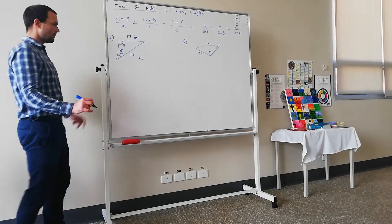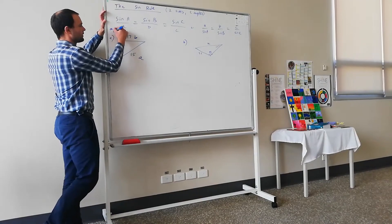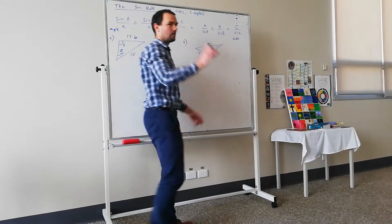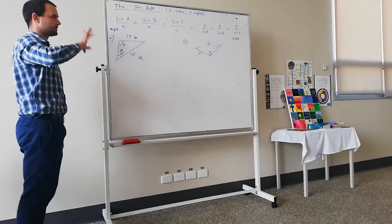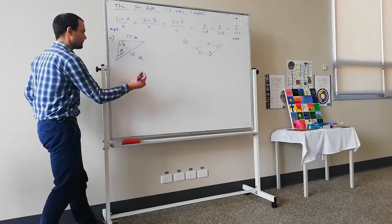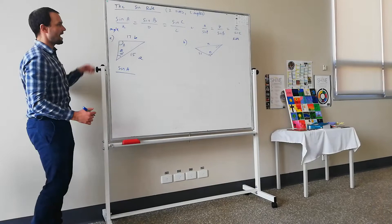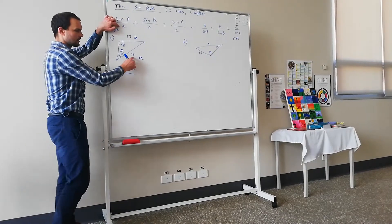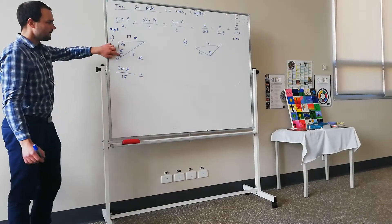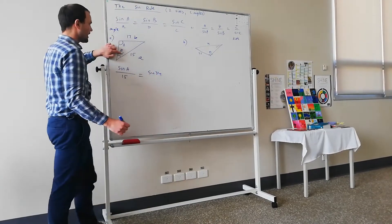And so then we'll make our statement. Now, if we're trying to find an angle, I recommend we use this formula. If we're trying to find a side, we can use any of these. But ultimately it does not matter. There'll just be a bit of extra algebra involved. So we're finding an angle, so we're going to make that statement. That's sine A divided by A. Now side A corresponds with 15, and that's equal to sine B. So that's sine of 34 divided by 17, divided by side B.